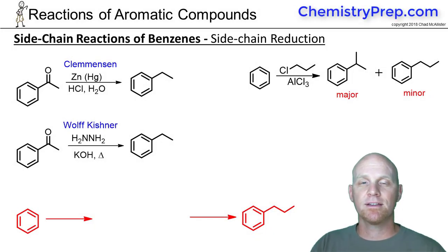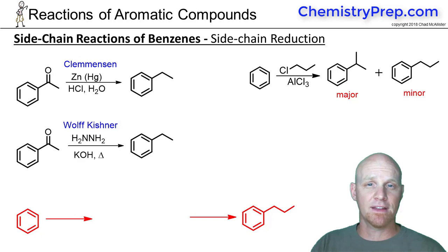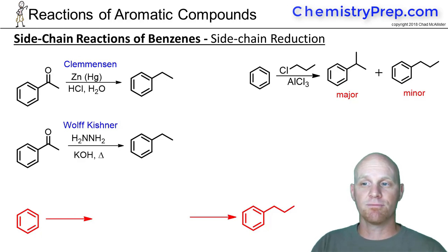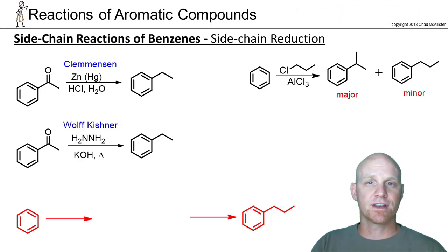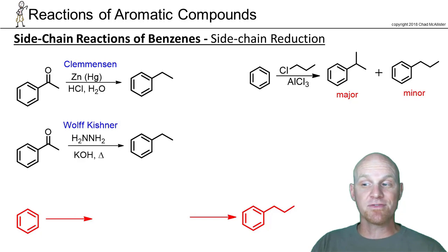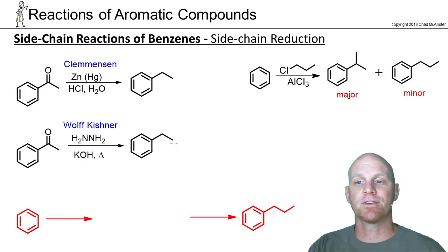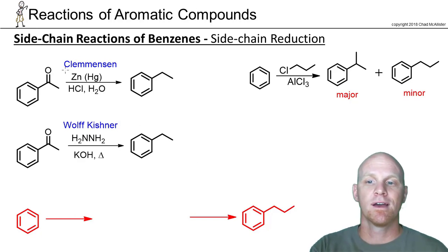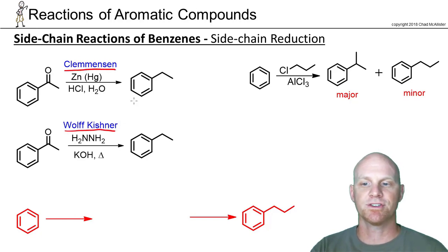The next two reactions technically don't have to involve the sidechains of benzene — they don't even have to involve benzene — but they have huge relevance here because they're super important for synthesis in this chapter. These are called sidechain reductions, and there are two of them: the Clemmensen reduction and the Wolff-Kishner reduction.